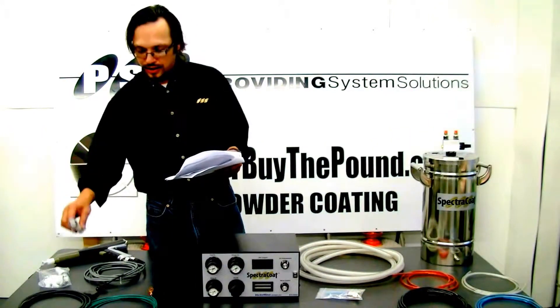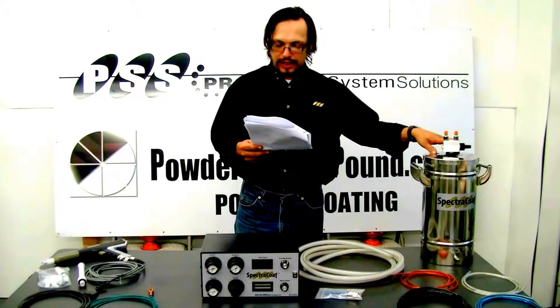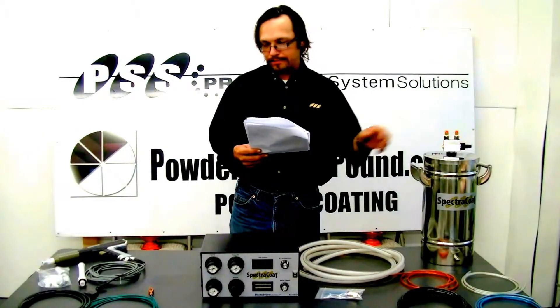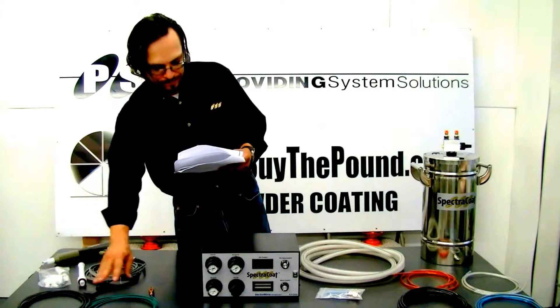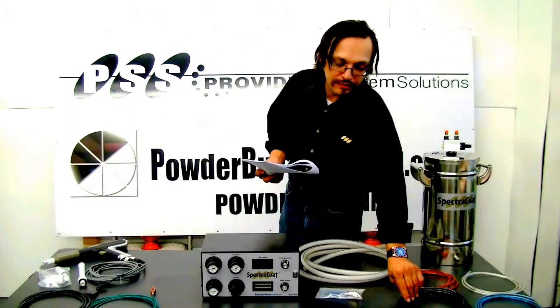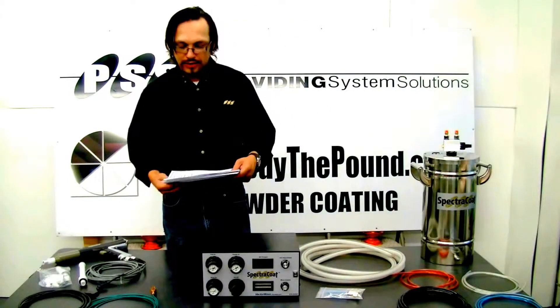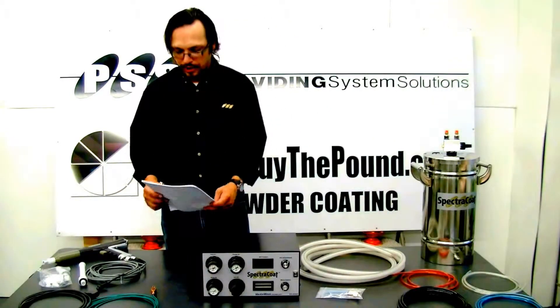We have our standard six inch extension electrode. We have our five pound constant fluidizing hopper with our powder pump. We have our power cord, our ground cable, and we also have our 15 foot black quarter inch rinse air cable. So that's all our parts that we need to get our system hooked up and going.